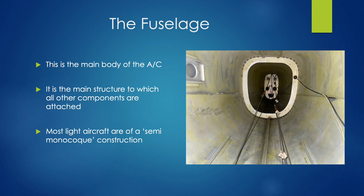First of all, we're going to look at the fuselage — the main body of the aircraft. It is the main structure to which all other components are attached. So all the other components are attached to the fuselage, making it the main part. Different aircraft have different construction techniques, but most light aircraft are of a semi-monocoque construction, and we'll go through what that means next.